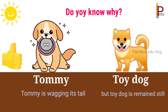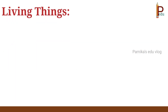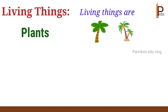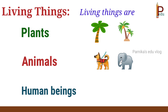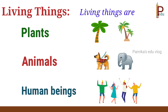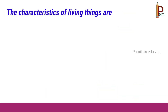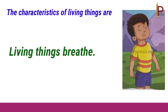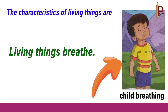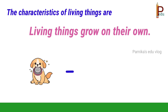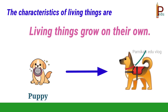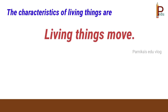Living things are plants, animals, and human beings. The characteristics of living things are: living things breathe — look at the picture of a child breathing. Living things grow on their own — a puppy grows into a dog.